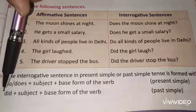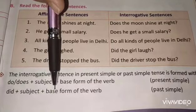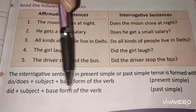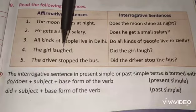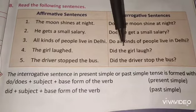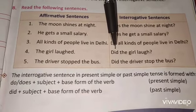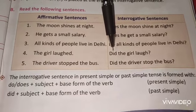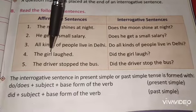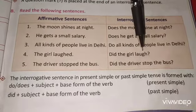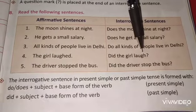In past simple: did + subject + base form of the verb. For example, 'The girl laughed' — it's past simple, so we write: did + subject (the girl) + base form. Laughed becomes laugh.